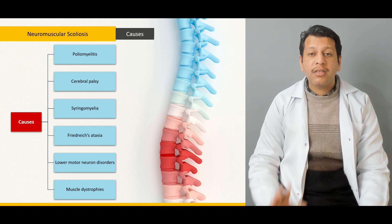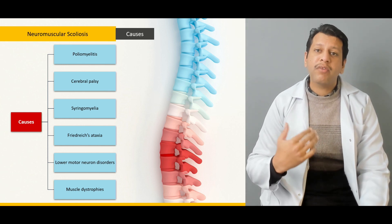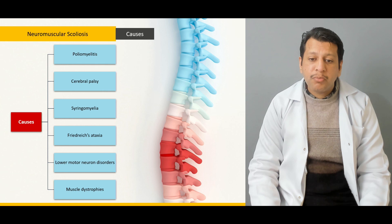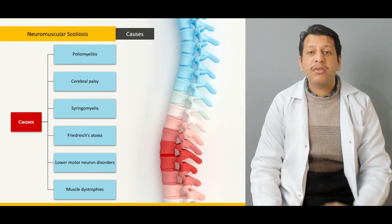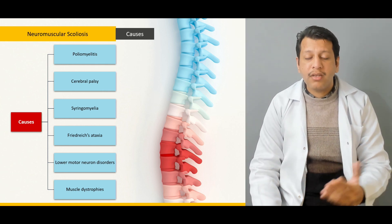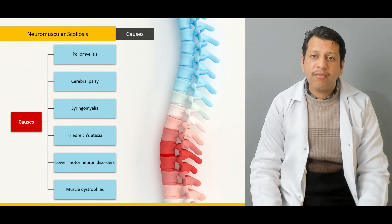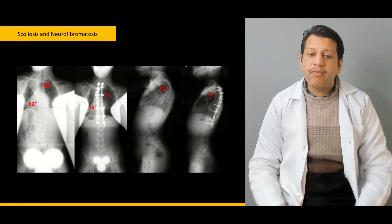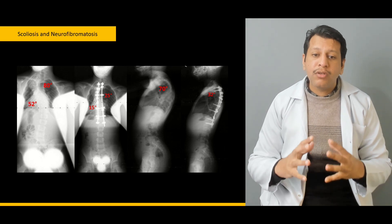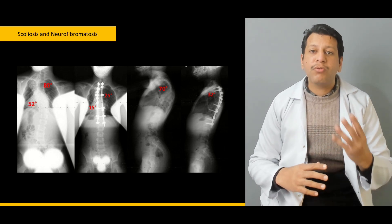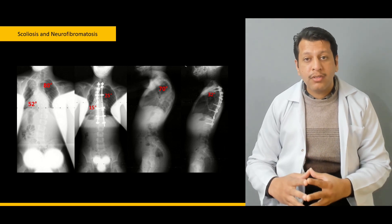We will briefly discuss scoliosis which may be syndromic or associated with neuromuscular diseases. Especially neuromuscular scoliosis, which is actually more aggressive — there are more rigid curves and it is relatively difficult to treat. We will briefly discuss how to surgically manage neurofibromatosis or scoliosis associated with neuromuscular disorders.